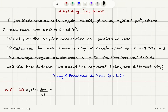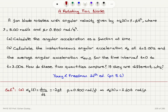Gamma is a constant, so the derivative of minus beta t squared with respect to time gives us minus 2 beta t. Beta is given as 0.800 radians per second cubed, and therefore alpha z of t equals minus 1.60 t radians per second squared. This is our angular acceleration as a function of time.